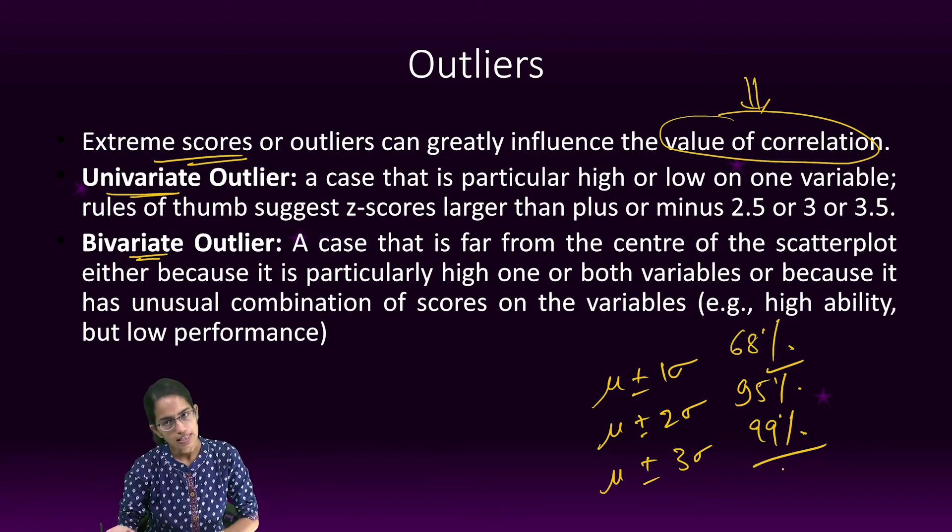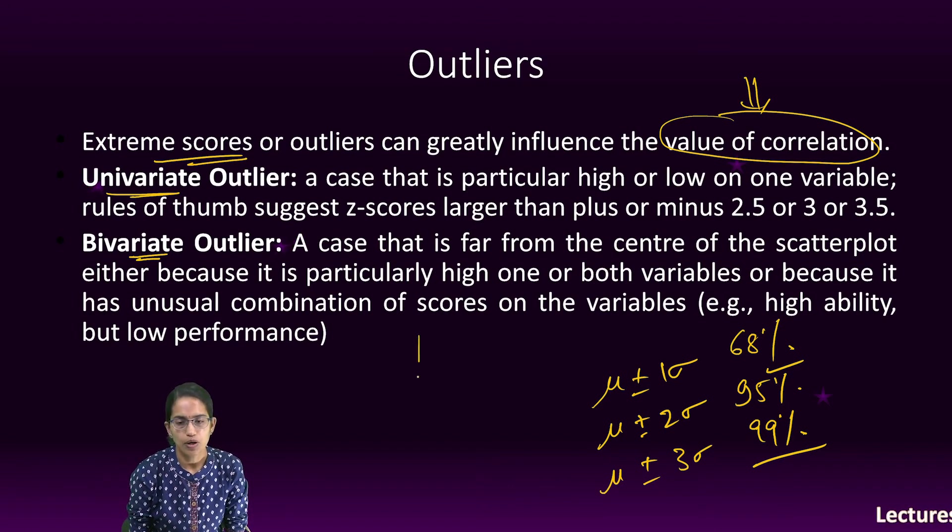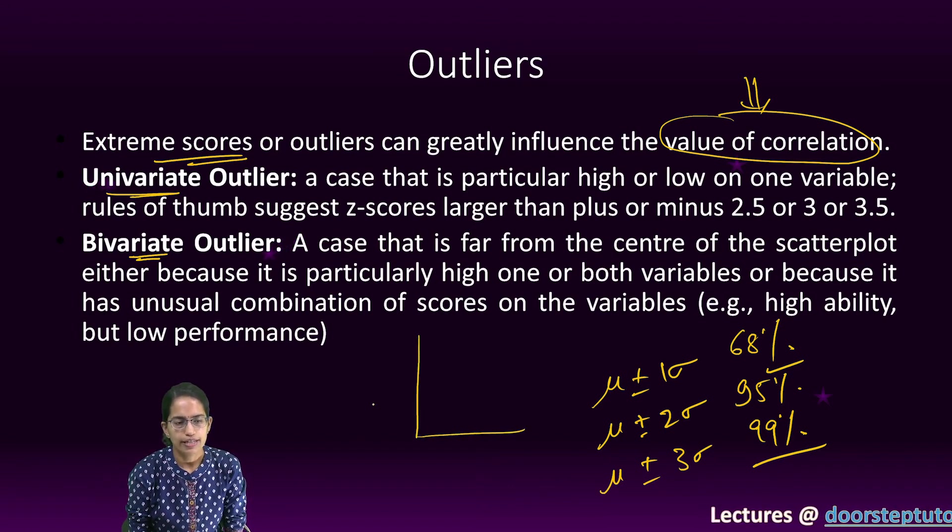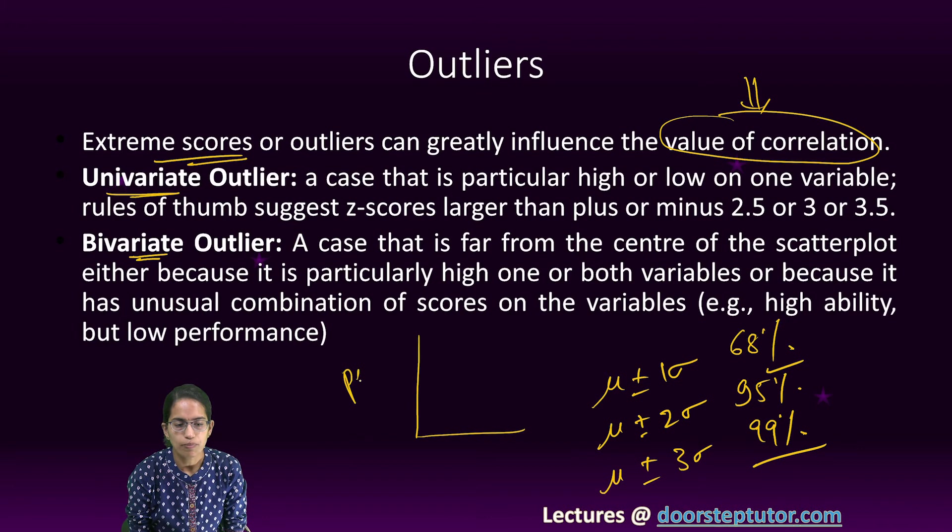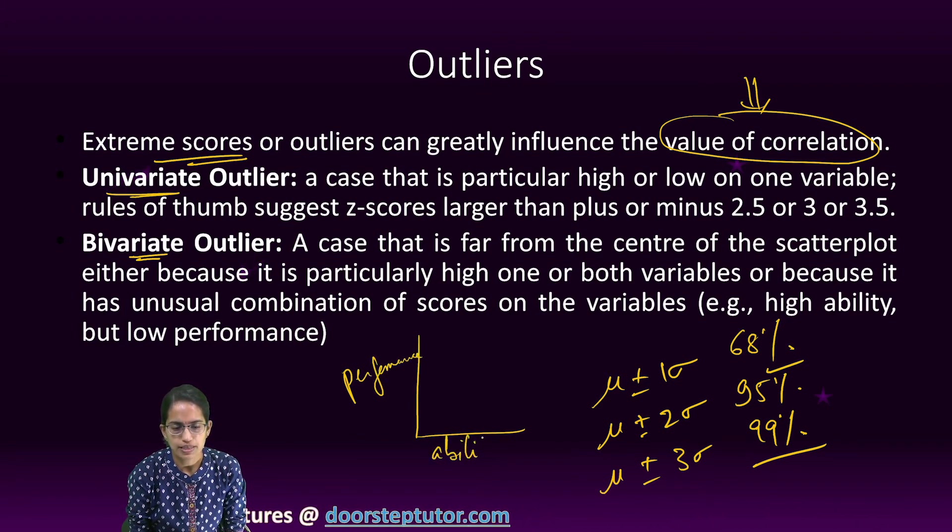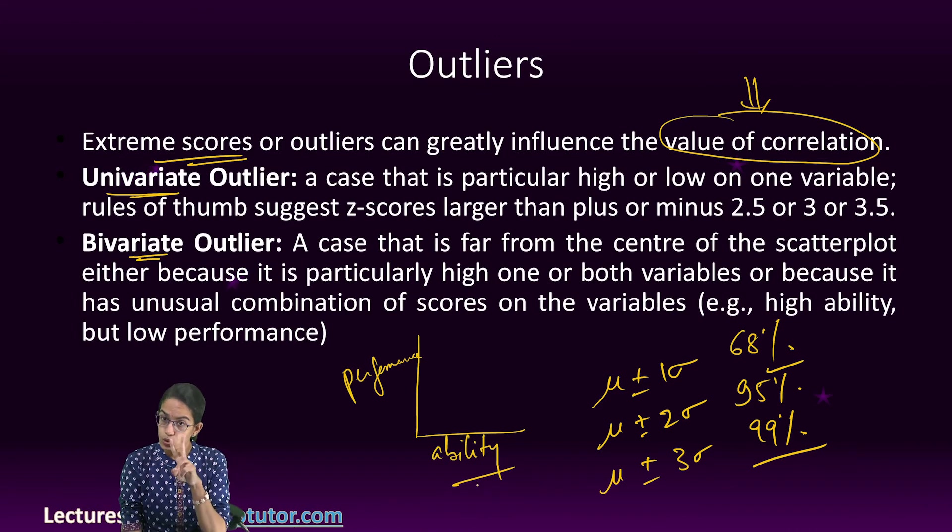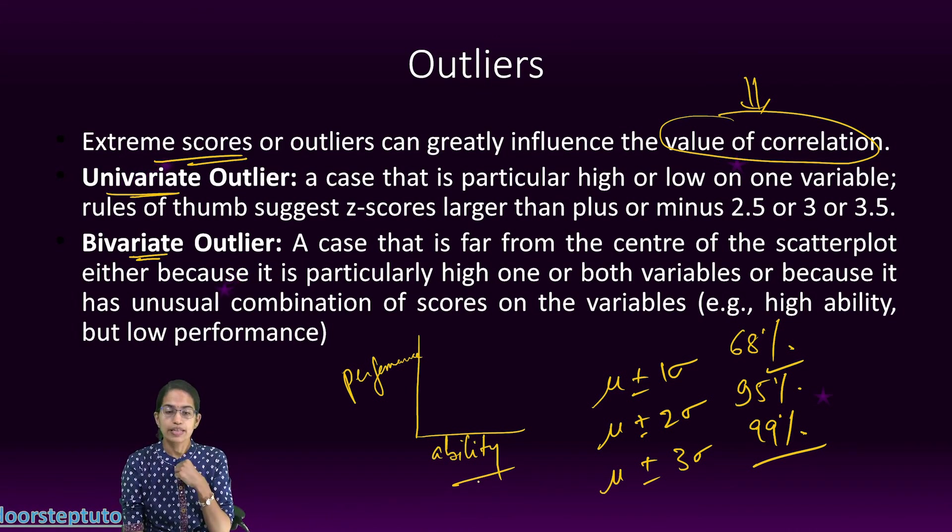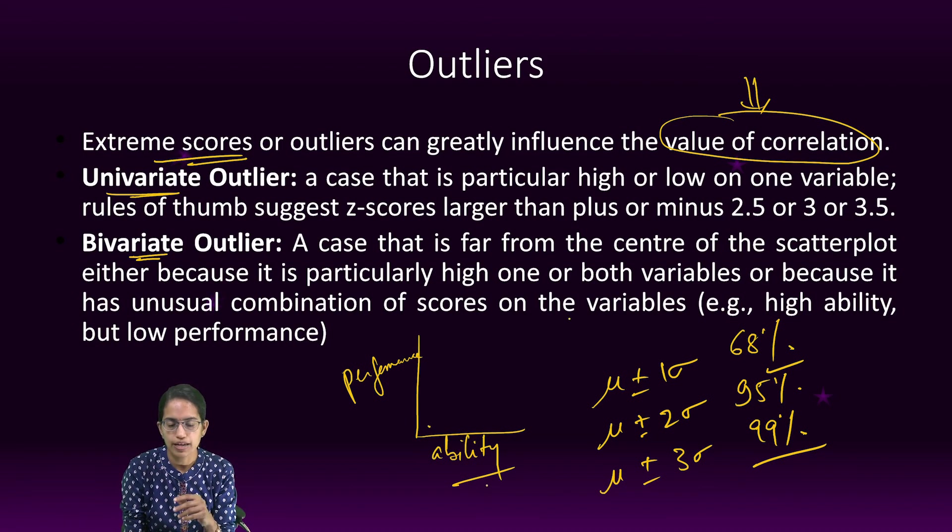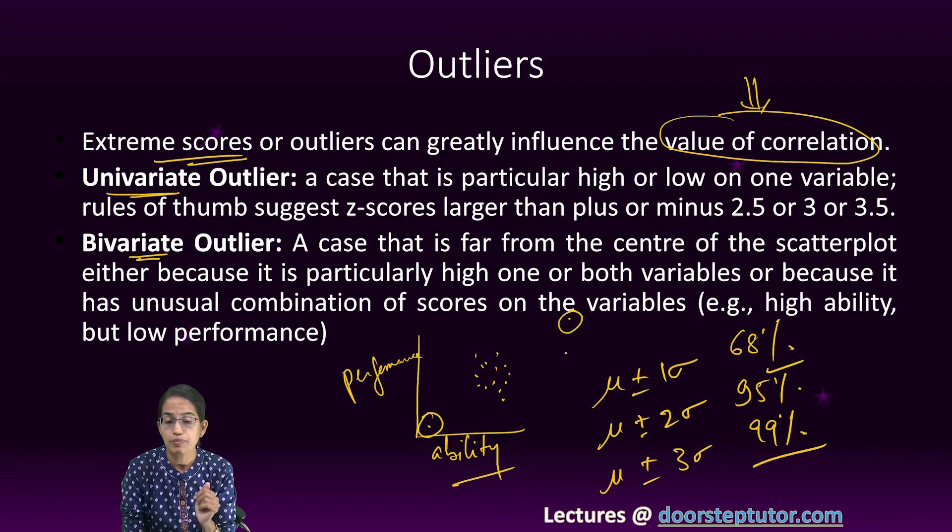There could be a scatterplot diagram, let's say between performance and ability. I have a plot between performance and ability with two variables. When there are two variables and I plot an extreme low value or extreme high value and remaining values are here on the scatterplot, this extreme value of low ability-low performance or high ability-high performance would be a bivariate outlier.